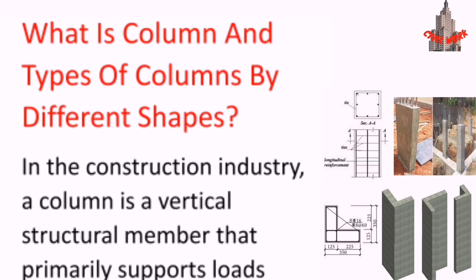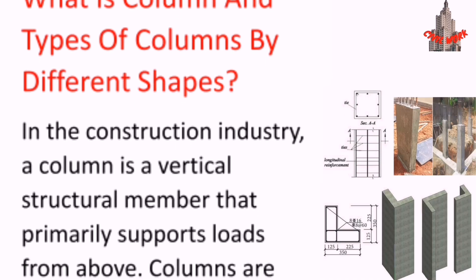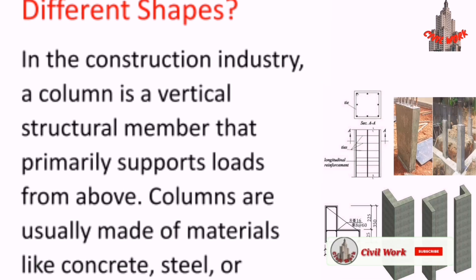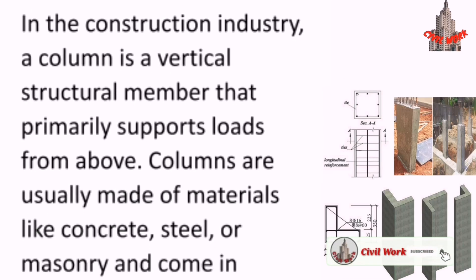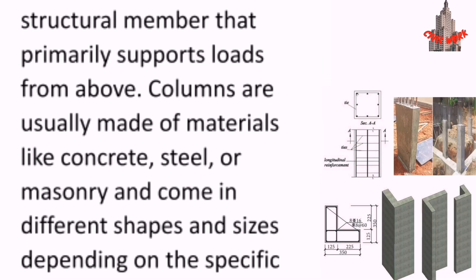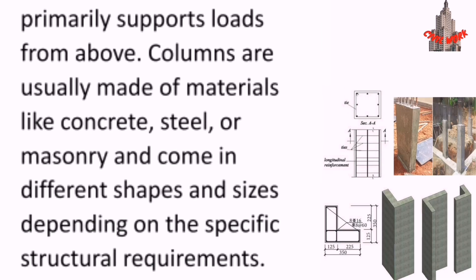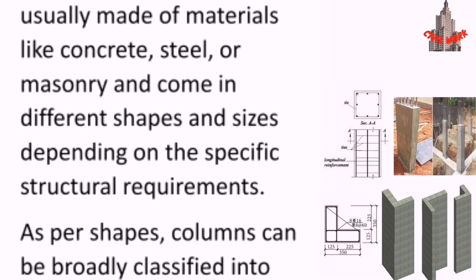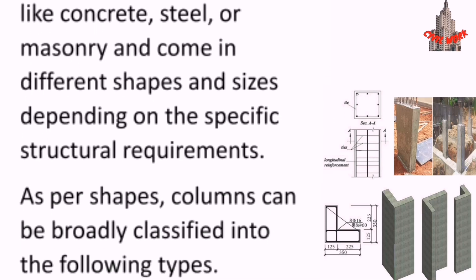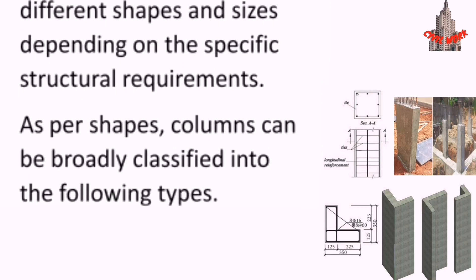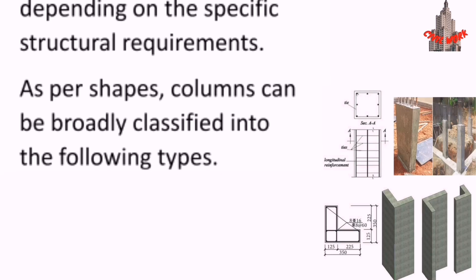What is a column and what are the types of columns by different shapes? In the construction industry, a column is a vertical structural member that primarily supports loads from above. Columns are usually made of materials like concrete, steel, or masonry, and come in different shapes and sizes depending on specific structural requirements.